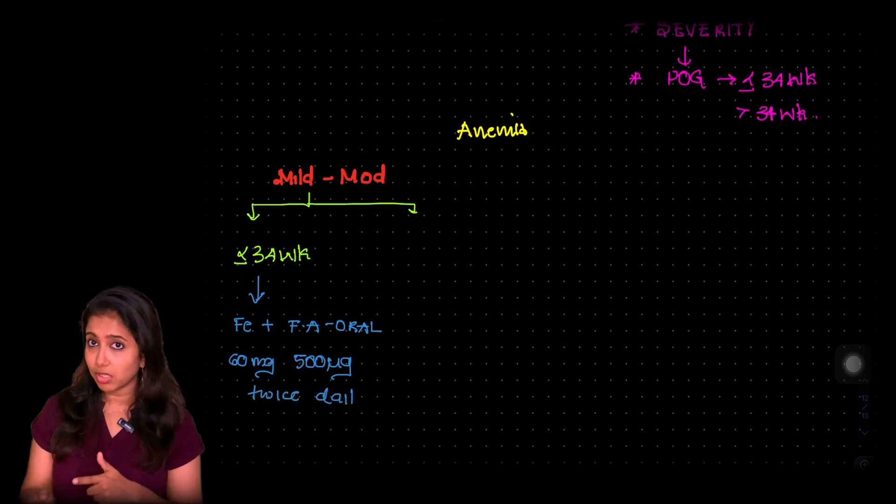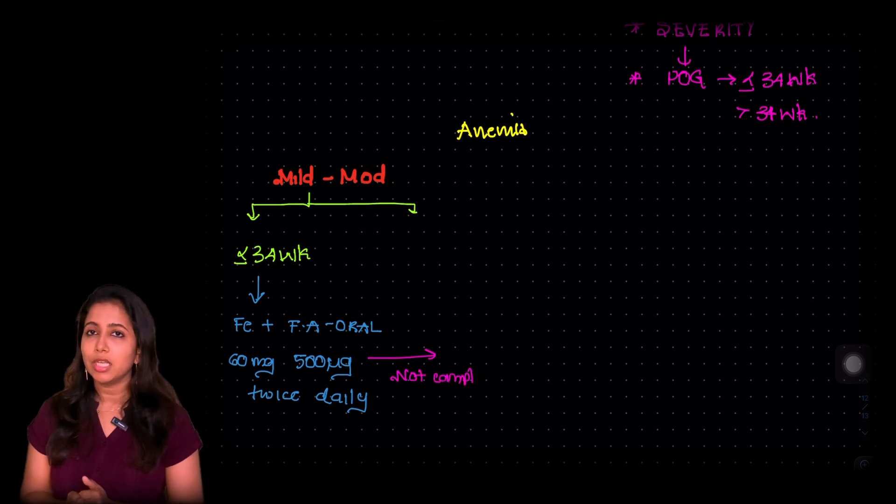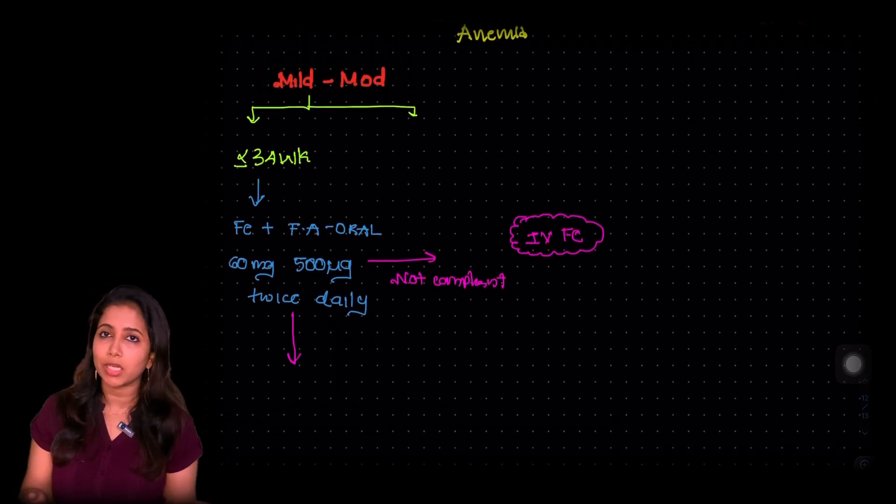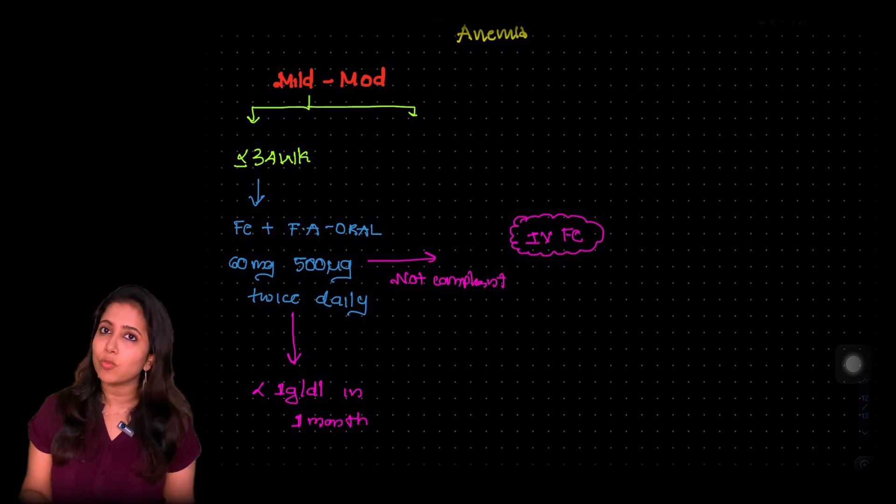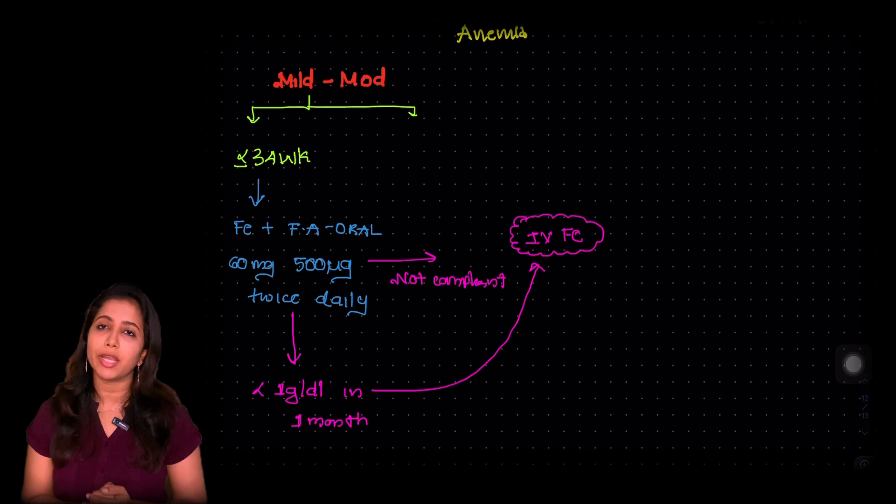In case if she is not compliant, we would be shifting to the next line that is IV iron. Suppose we give the patient treatment for 1 month and the rate of increase is less than 1 gram in 1 month. When the rate of increase is less than 1 gram per deciliter in 1 month, again we are going to shift to IV iron.